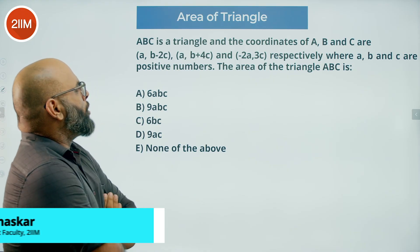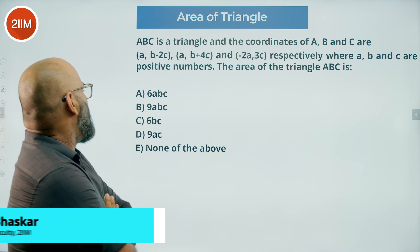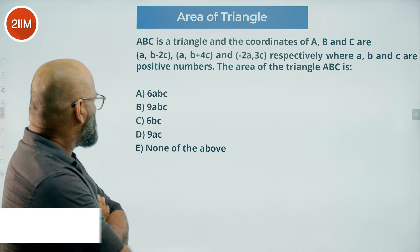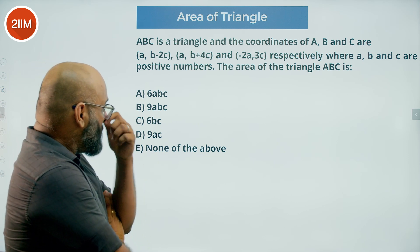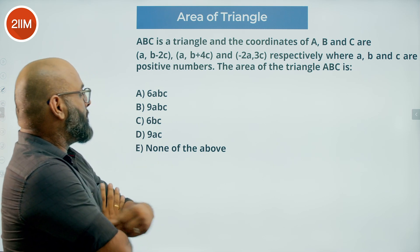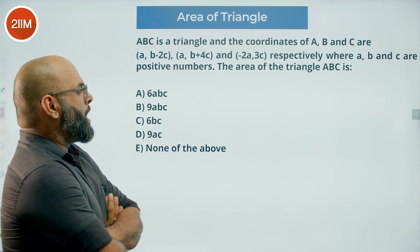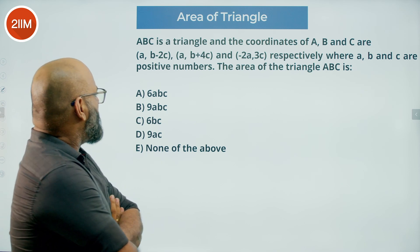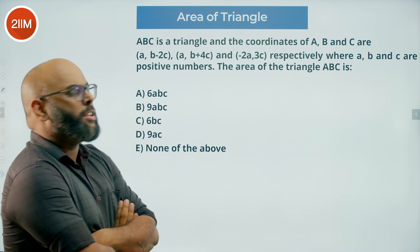ABC is a triangle and the coordinates of A, B and C are A comma B minus 2C, A comma B plus 4C, and minus 2A comma 3C respectively, where A, B and C are positive numbers. The area of the triangle is?